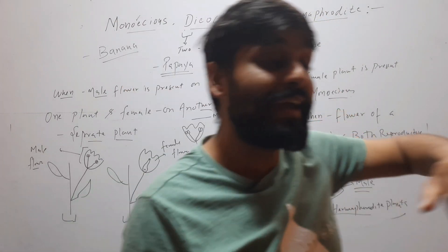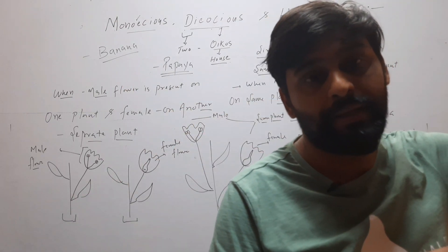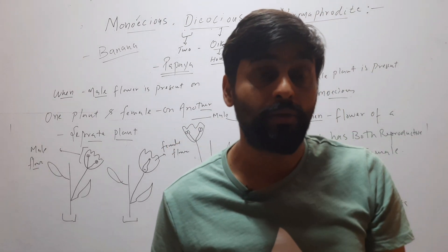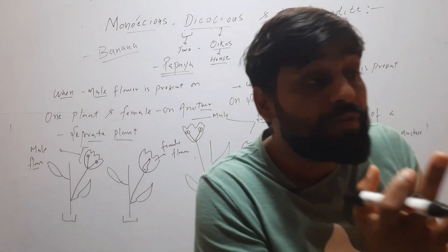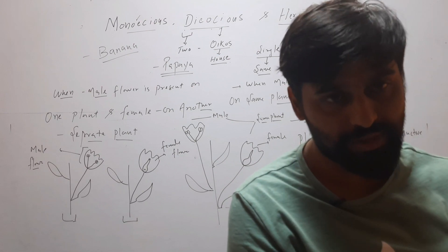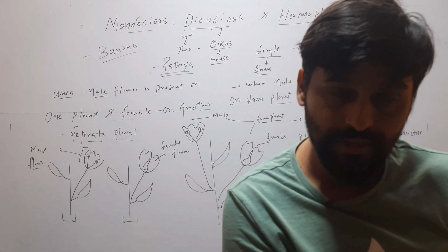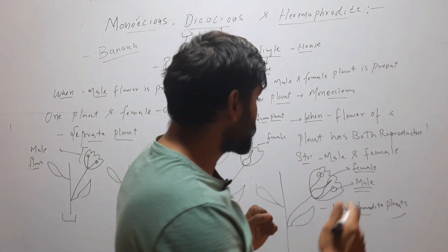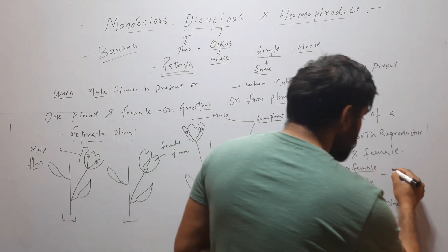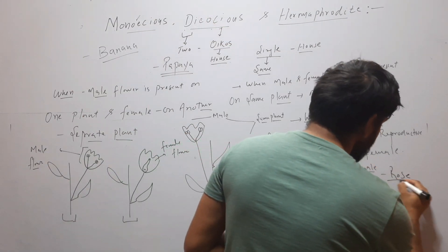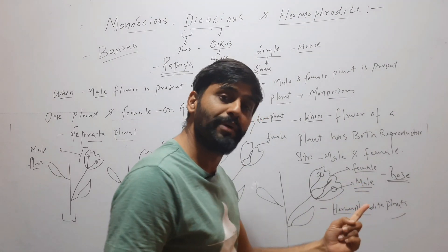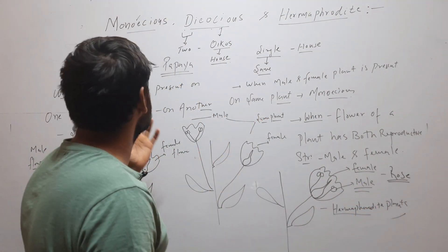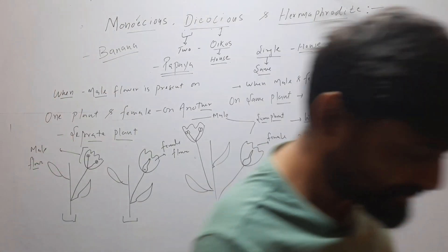Coming to Hermaphrodite — when the same flower of a plant has both reproductive structures, male and female, then this type of plant is called Hermaphrodite. For example, rose — the flower of rose has both male and female reproductive structure. So these are the three terms: Monoecious, Dioecious, and Hermaphrodite.